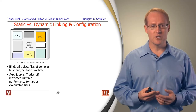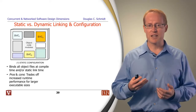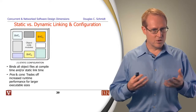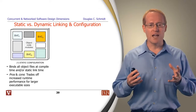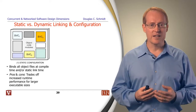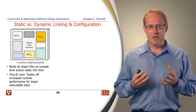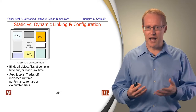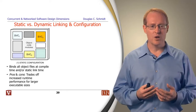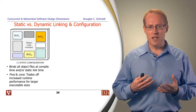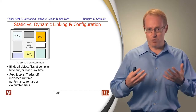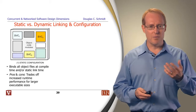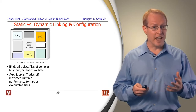Another configuration dimension involves static versus dynamic linking and configuration. In a statically configured system, objects, functions, components, and services are brought together at compile and link time. The benefit is greater runtime performance due to optimizations like inlining. The downside is less flexibility — you typically need to stop, recompile, and relink a running server to make changes, which can be overly inflexible in environments that can't afford any downtime.